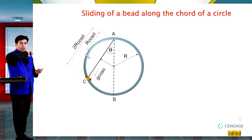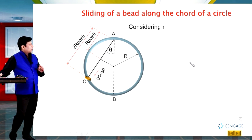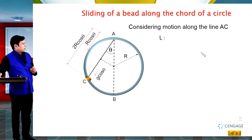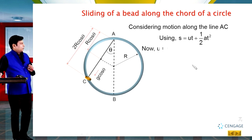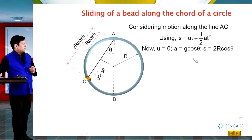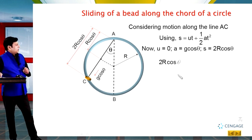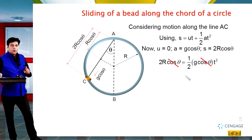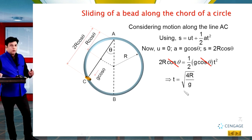Taking the downward direction as positive for finding the time, we use s = ut + ½at² again. We know s = 2R·cosθ, a = g·cosθ, and initial velocity = 0. Substituting: 2R·cosθ = ½·g·cosθ·t². Here, cosθ cancels from both sides, and we get t = √(4R/g). This is the time of sliding of the bead along the chord which is not vertical.